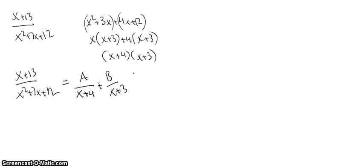And so we're going to multiply by the lowest common denominator, which in this case is x squared plus 7x plus 12. And so that's going to give us x plus 13 is equal to a times x plus 3 plus b times x plus 4.